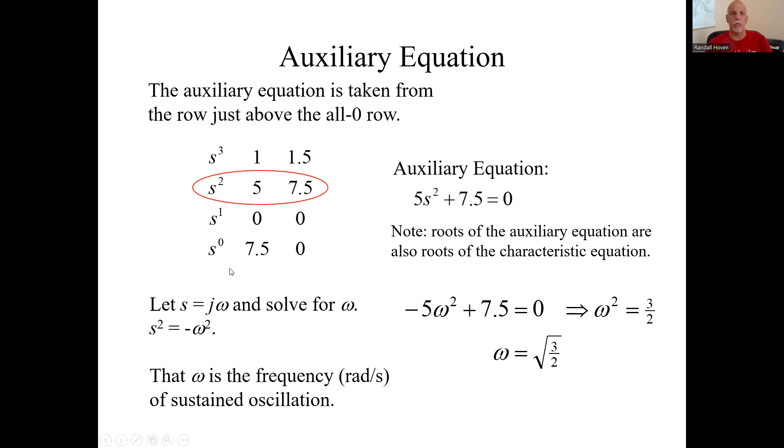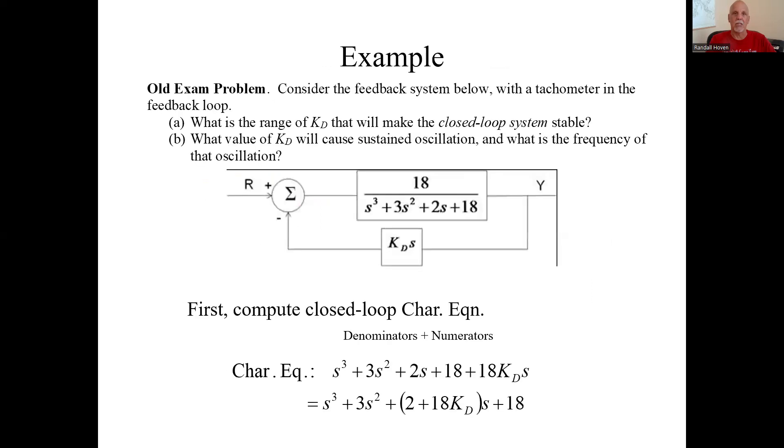How do we solve for the frequency? We set S equal to j omega, we solve for omega. To do that, S squared equals minus omega squared. Put in minus omega squared here for S squared, solve for omega. Omega squared equals 7.5 over 5, which is three halves. Omega, which is the frequency in radians per second of the sustained oscillation with K equals 7.5. That's how you find sustained oscillation, the frequency of sustained oscillation.